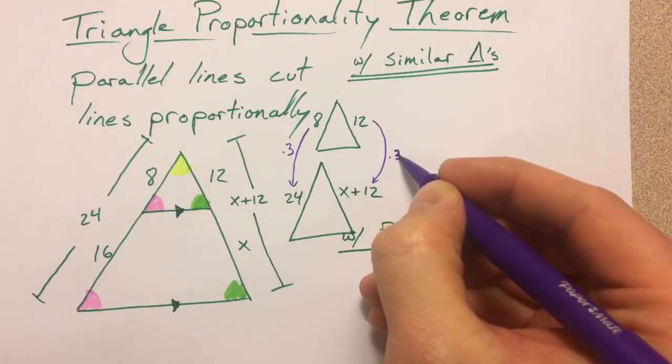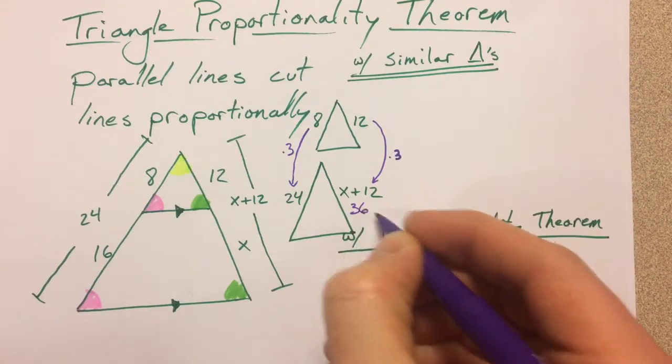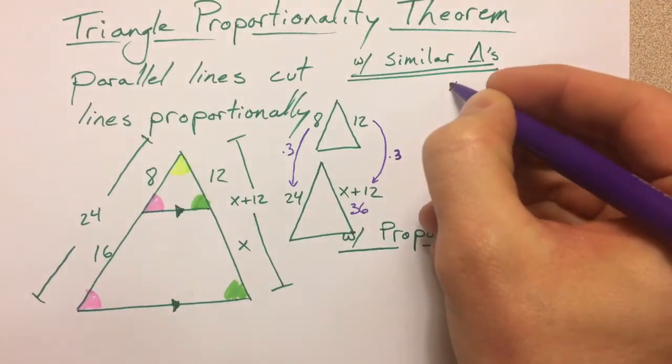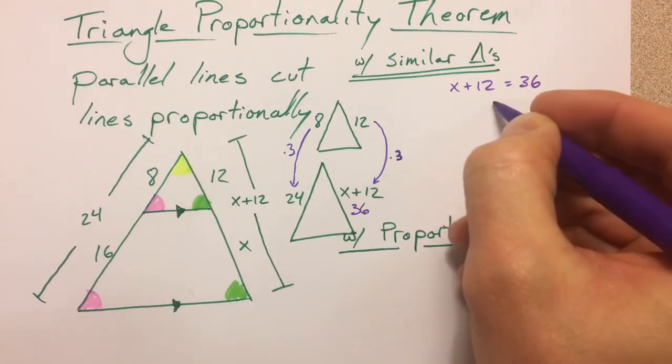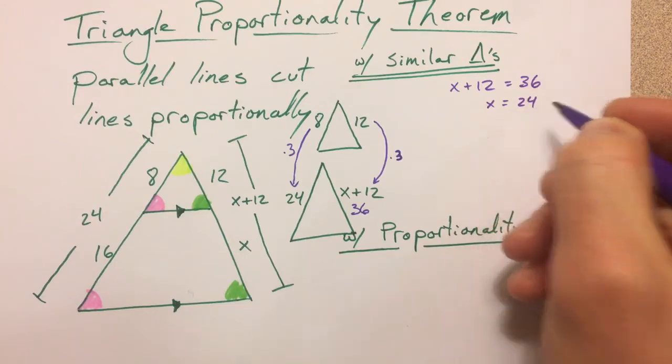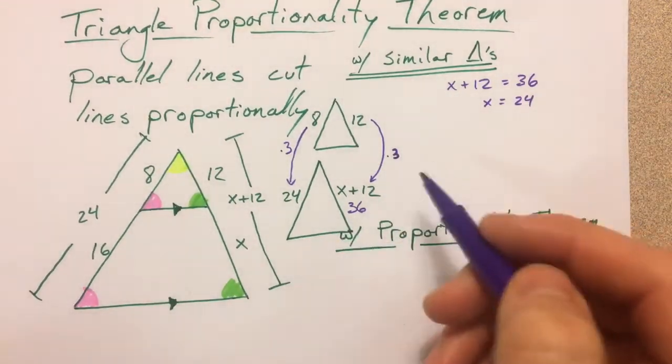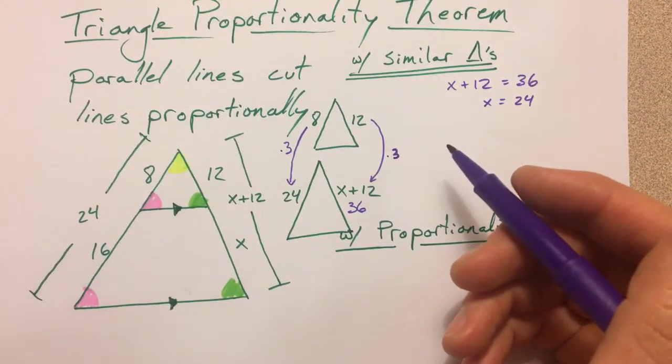So if x plus 12 has to be 36, I know that x has to be 24. So that's the short way around.